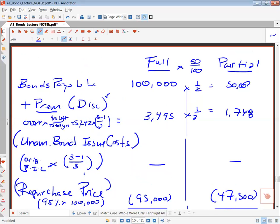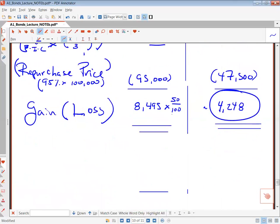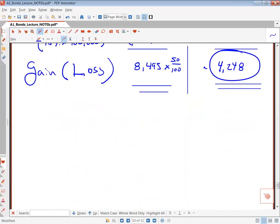And that's how you do a partial. You do the full, and then you can multiply all the components by the amount retired over the full face value. So this makes it really easy.